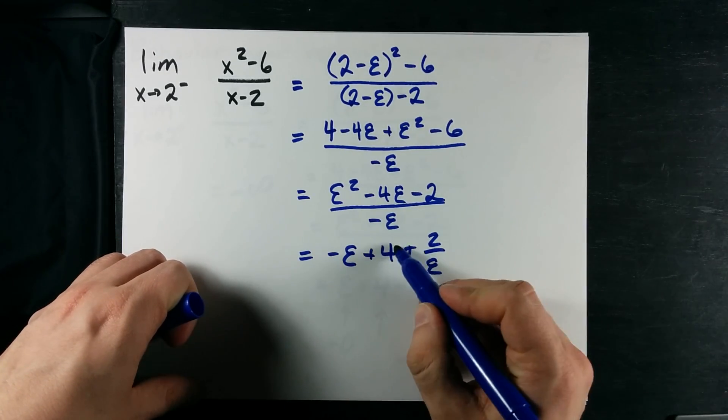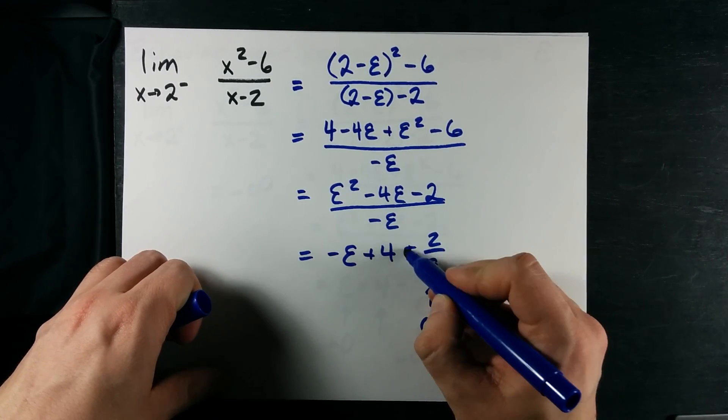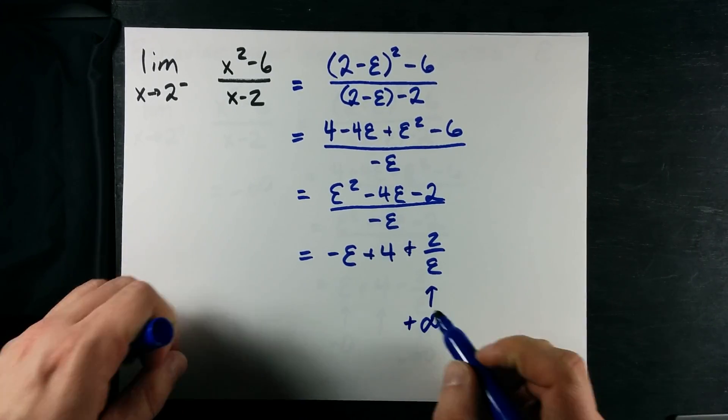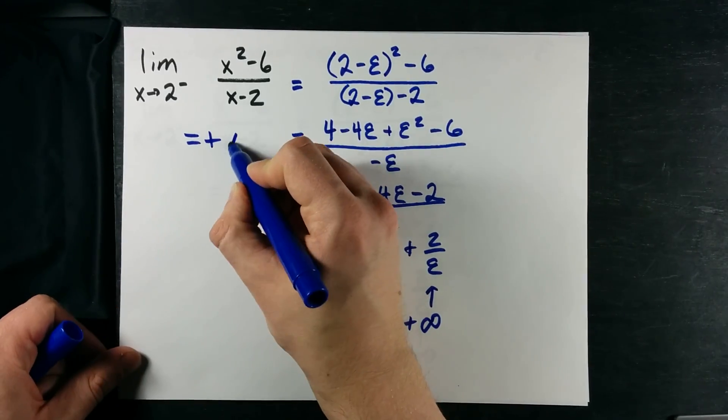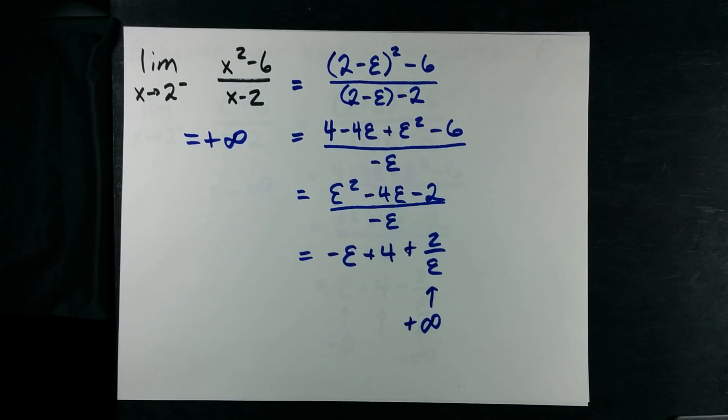I get negative epsilon plus 4 plus 2 over epsilon. This becomes 0. This is a whole number. This becomes infinity. And because of the plus sign in front of it, it becomes positive infinity. So this particular function approaches positive infinity from the left.